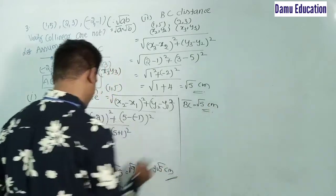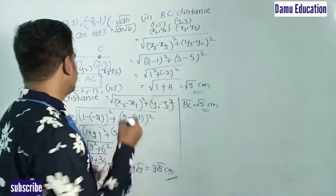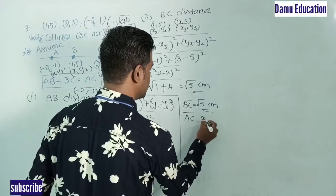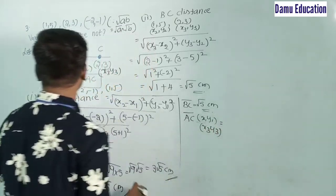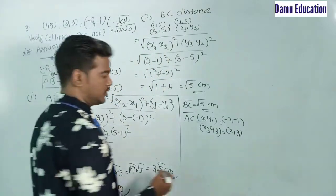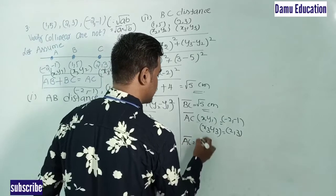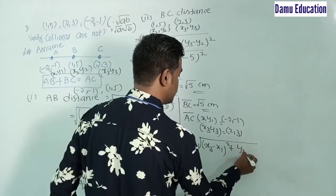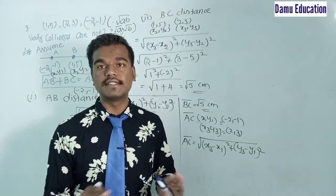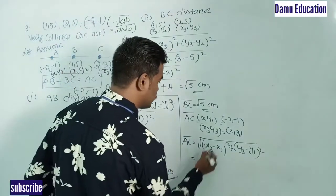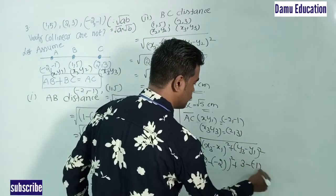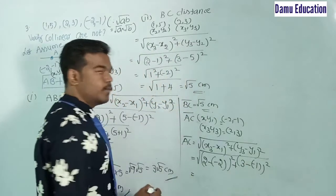Now for the final combination, AC. The points are A = (−2, −1) and C = (2, 3), labeled as (x1, y1) and (x3, y3). The formula is: AC = √[(x3 − x1)² + (y3 − y1)²]. Substituting: (2 − (−2))² = (2 + 2)² = 4² = 16, and (3 − (−1))² = (3 + 1)² = 4² = 16.